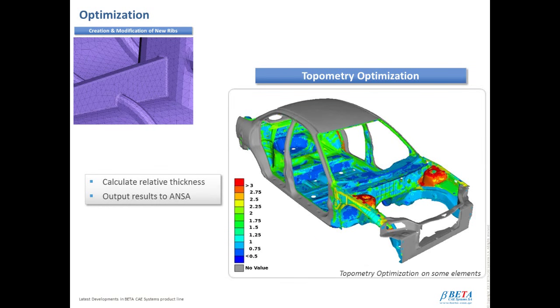In the META post area, with the topometry optimization toolbar, it is possible to post-process results from topometry optimization, calculate the relative thickness, and output results to ANZA.